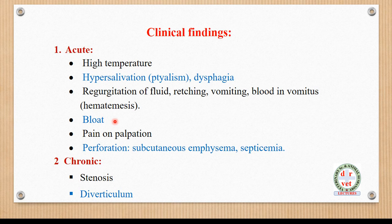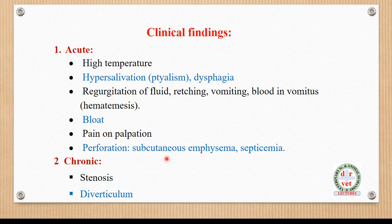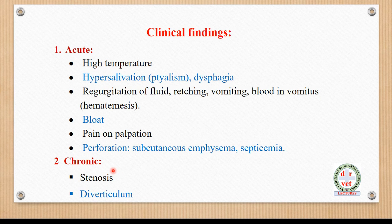There is difficulty in eructation of gas, leading to accumulation of gas in the rumen and a serious condition called bloat in ruminants. Pain on palpation in the neck region over the esophageal area elicits a pain reaction. In severe cases, when there is necrosis of the wall of the esophagus, there is perforation or rupture of the esophagus. Food material leaks into the subcutaneous tissue, causing subcutaneous emphysema. If organisms or toxins enter the blood, a further serious condition — septicemia — results.